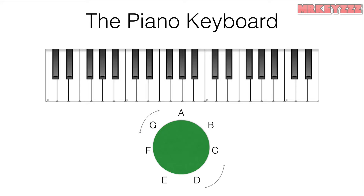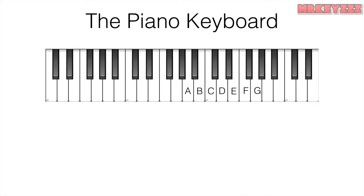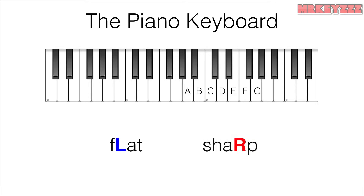Each of these letters can be found on a white key on the piano. These types of notes are known as natural notes, which means that they are white keys on the piano. Each letter has a corresponding sharp and flat. Sharps and flats are the closest notes to the right and left of a white key respectively. Here's an easy way to remember which one is which: the word flat has the letter L in it, so flats are to the left of each natural note. The word sharp has the letter R in it, therefore sharps are to the right.